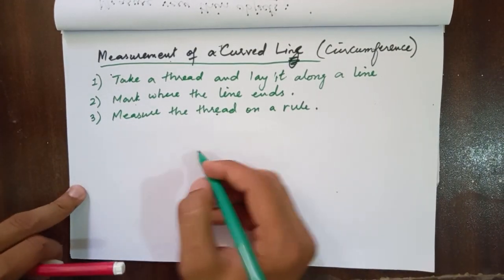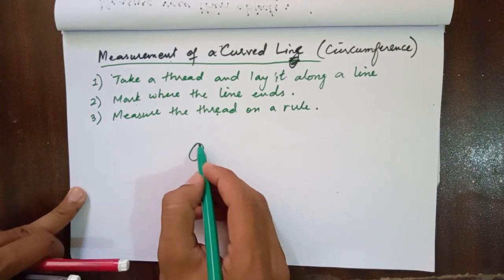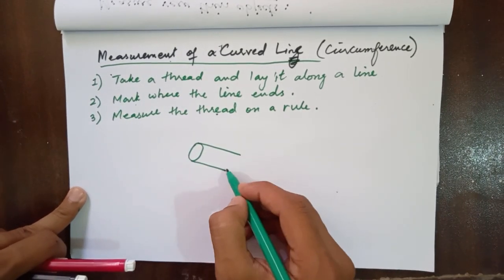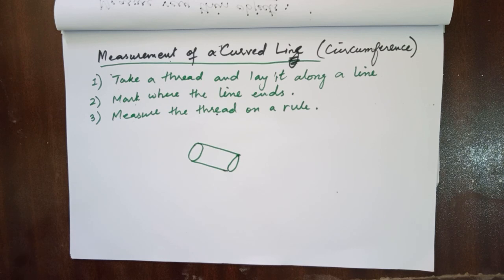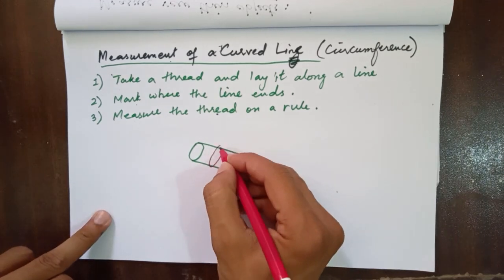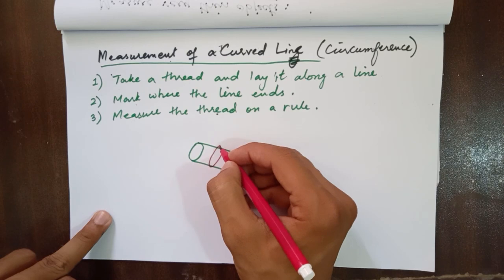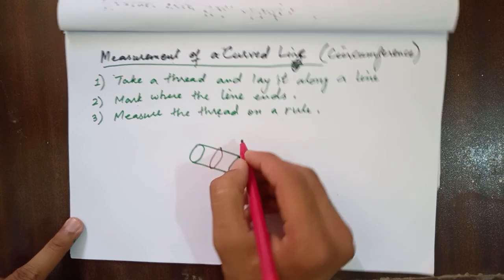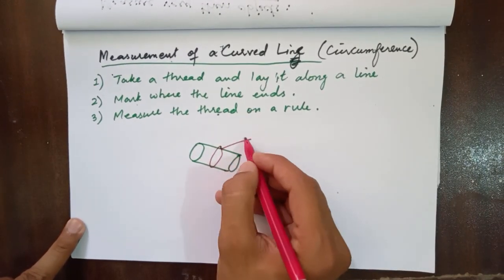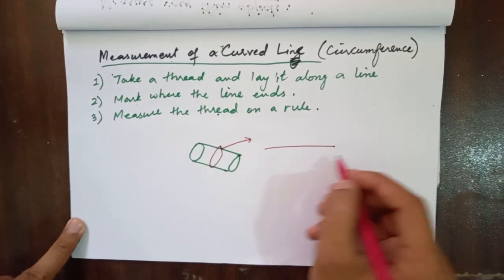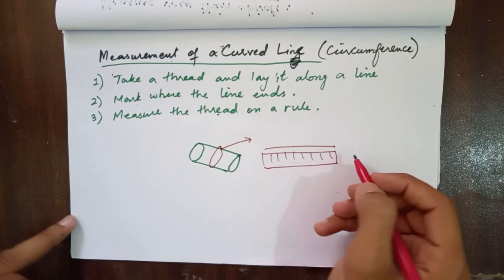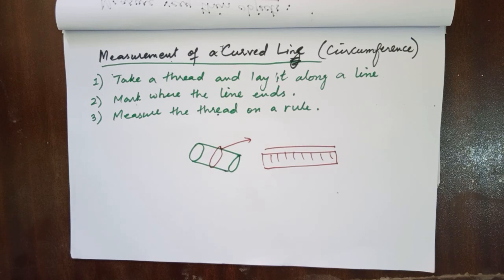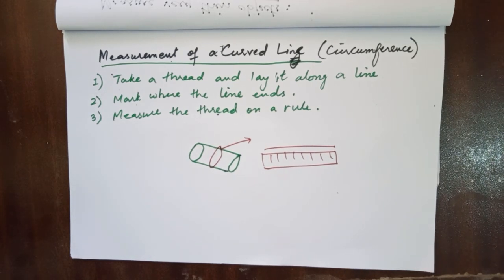For example, if we have to measure the circumference of a cylinder, we will take a thread and tie it around the cylinder. Then we will measure this thread by the meter rule, so that we are able to find out the length of curved lines.